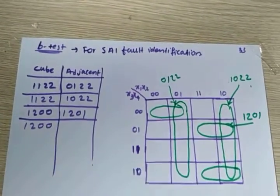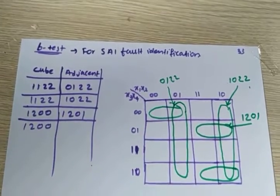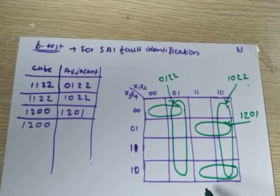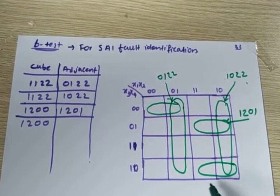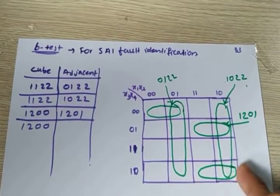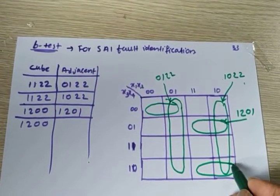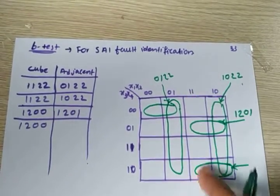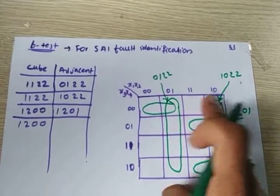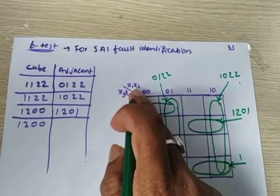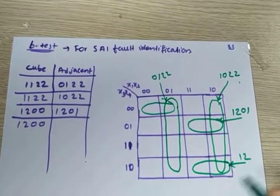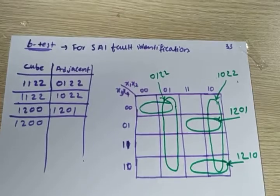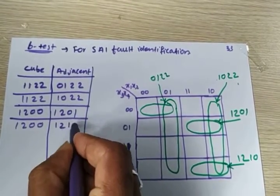Now what is another adjacent cube? Another cube is 1·2·1·0. Here x1 is 1, x2 can be 1 or 0 so it is 2, and x3·x4 is 1·0, so it is 1·2·1·0. Now for another sub-cube: here x1 is 0, x2 can be 0 or 1 so it is 2, x3 and x4 are 0·0. So it is 0·2·0·0.